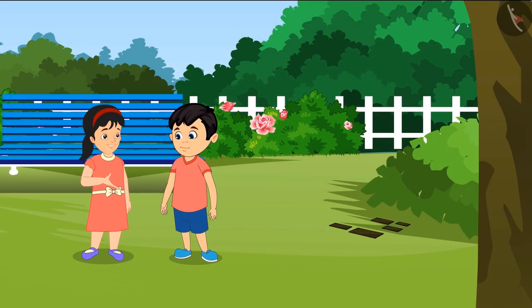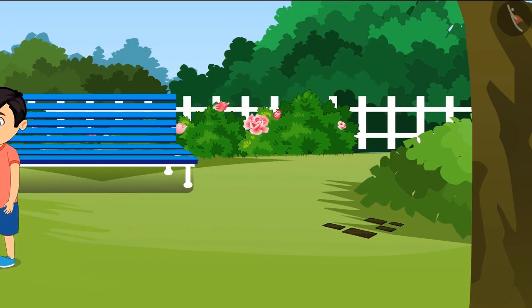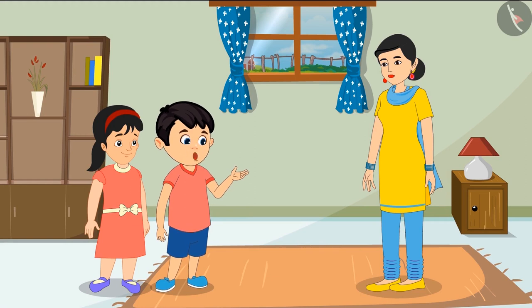Yes, Shoto. Let's get the rope from Mummy. Pinky and Shoto went to get the rope from Mummy. Mummy, we need a rope to make a swing. Okay Shoto, there are two ropes inside. Go and get them.